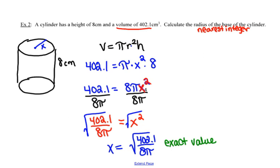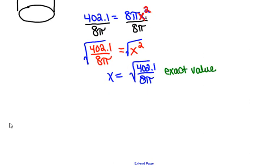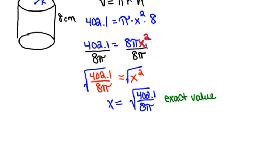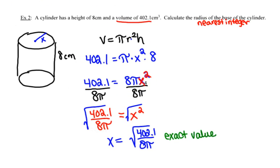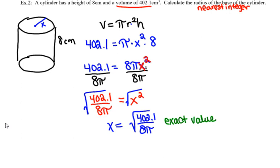But I'm telling you that in this example, instead of finding an exact value, I now want to round that to the nearest integer. So that to the nearest integer, I'm going to need to go ahead and get my calculator out.